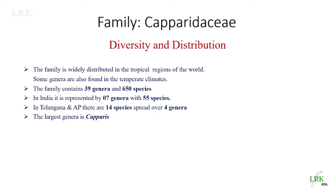When it comes to diversity and distribution, the family is widely distributed in tropical regions of the world — regions close to the equator with relatively high temperatures. Some genera are also found in temperate regions, which are away from the equator and are relatively cold. So in both tropical and temperate climates, you can find these plants. This family is represented by 39 genera and 650 species all over the world; in India, it is represented by 7 genera with 55 species.